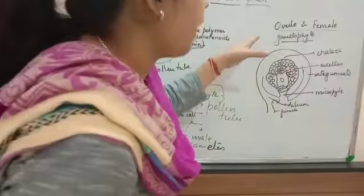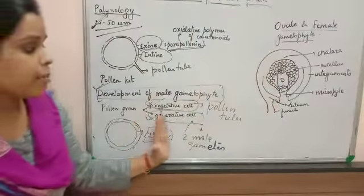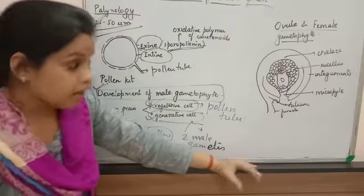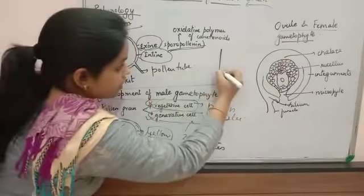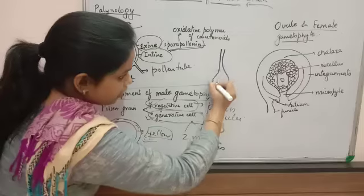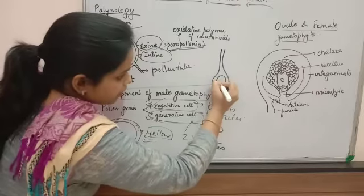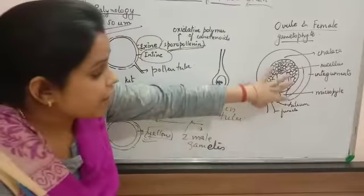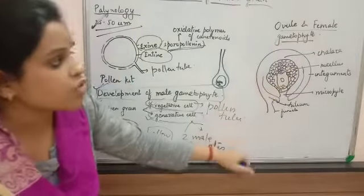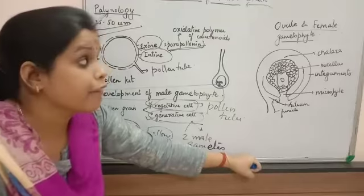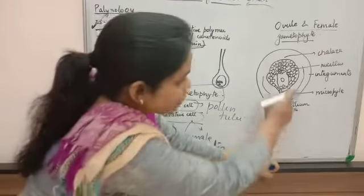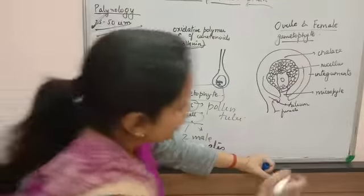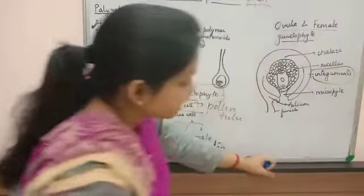Moving on to ovule and the female gametes. If we talk about the internal structure of the ovule, it is surrounded by two to three layers called integuments, which are the protective layers.